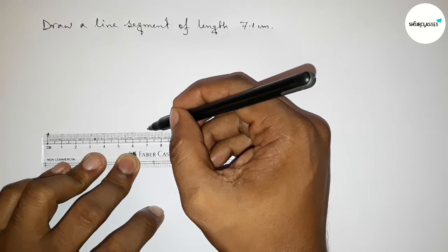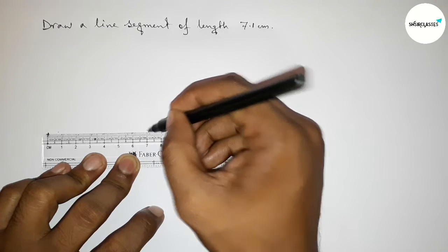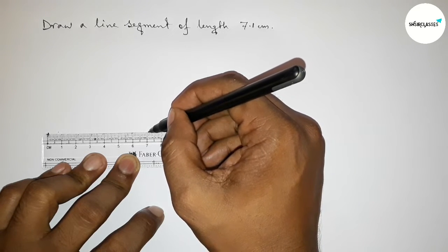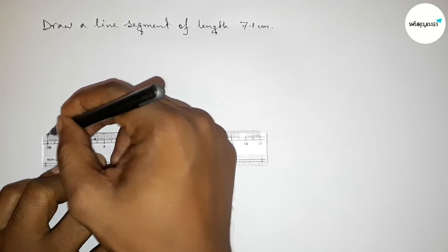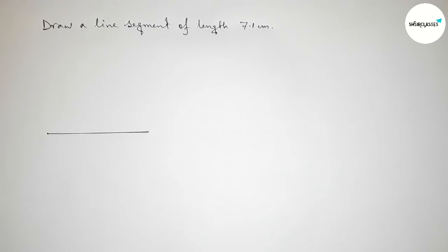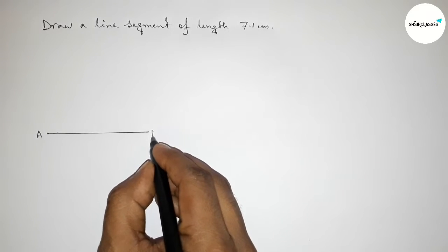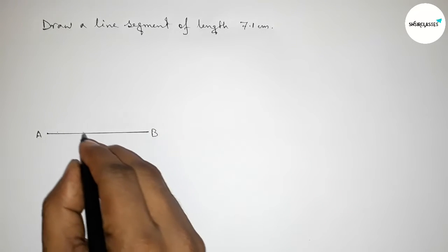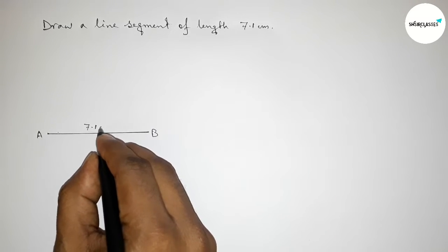And this is 7, 7.1 centimeters. So we have to mark 7.1 centimeters here and join this line perfectly. Taking point A here and here B, so AB equals 7.1 centimeters.